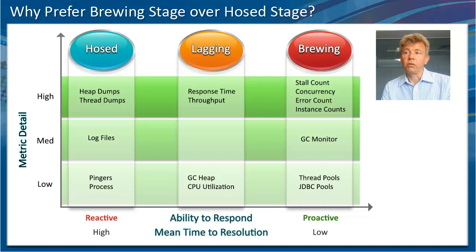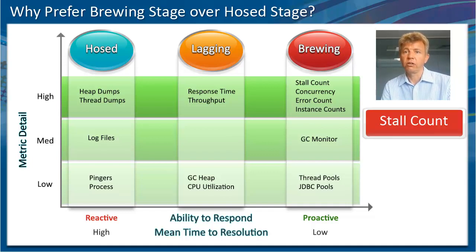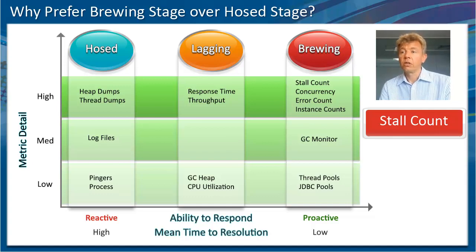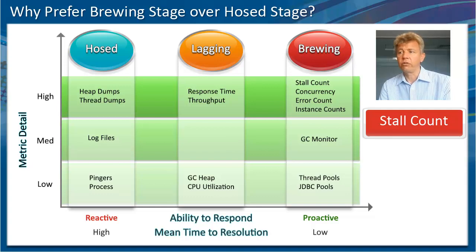To catch issues in the brewing stage, the stall count is the most important metric for monitoring your methods and the amount of time it takes for your methods to be executed. Always ensure that when you monitor an application, the stall count metric is part of your dashboards and alerts that you set up in CA APM.